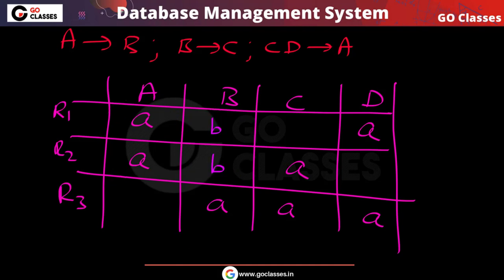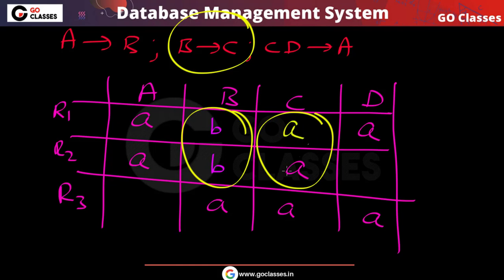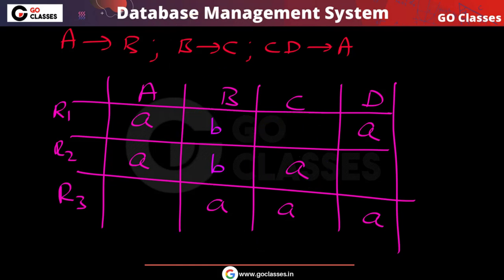Next, B determines C. If two tuples have the same B value, they must also have the same C value. Applying this dependency, we update the C entries in the corresponding rows where B values match.